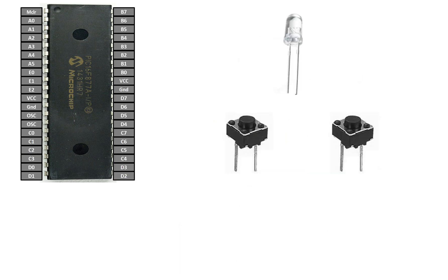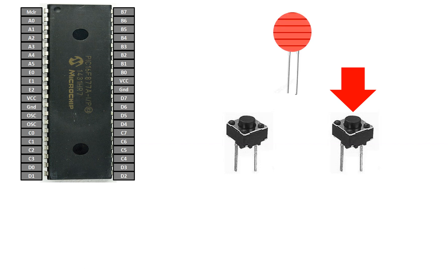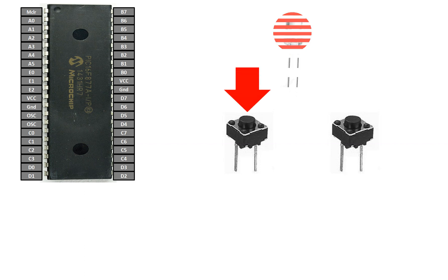We have two buttons — one connected to D2 and one to D3 — and an LED connected to PWM1 pin. When the button is pressed, the brightness increases; as long as you hold the button, brightness keeps increasing. When you release, the brightness stays at that level — it won't roll back. When you press the other button, brightness decreases and stays wherever you release it. Let's now get into the programming and the hardware implementation.